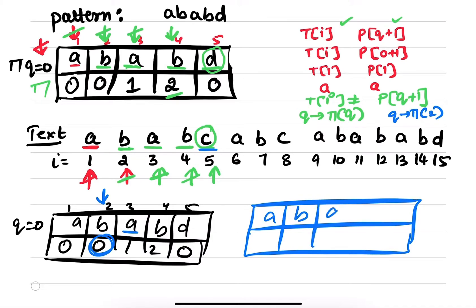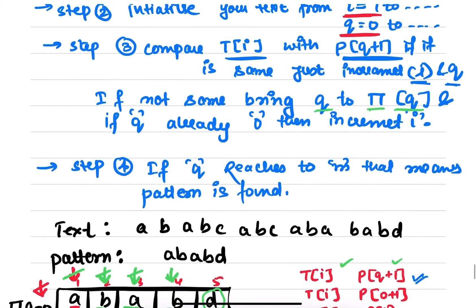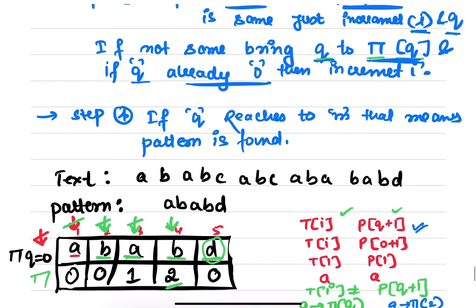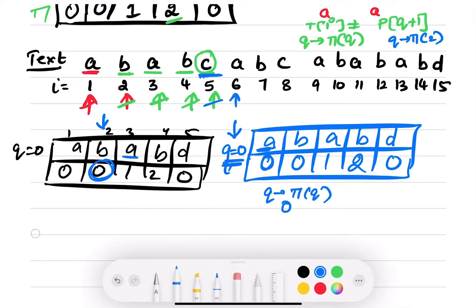The prefix table is a, b, a, b, d: 0, 0, 1, 2, 0. So q equals 0, and q will come here. Now again you check: is C matching with A? It's not matching. Then what you do — bring q to pi of q. But if q is already 0, then in that case just increment i. So we compared C with A, found it not equal, tried to change q to pi of q which is 0, but q was already 0, so just increment i.